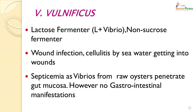The third halophilic Vibrio is Vibrio vulnificus. It is a lactose fermenter — the only Vibrio which is a lactose fermenter from the beginning — so it is often referred to as an L-plus Vibrio. It is a non-sucrose fermenter and essentially causes wound infections. People walking on the beach with small cracks on their feet can be infected — sea water contaminated with Vibrio vulnificus enters the wound and causes cellulitis. It can eventually lead to septicaemia and can be obtained from raw oysters which penetrate the gut mucosa. However, there are no gastrointestinal manifestations; Vibrio vulnificus does not present as diarrhoea.